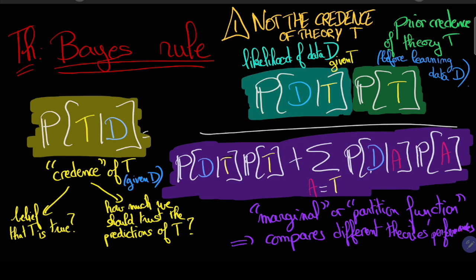In particular what the denominator says is that if a theory is performing very well and predicts the data very well it may nevertheless be not credible if other theories, alternative theories are performing better than the theory T itself.